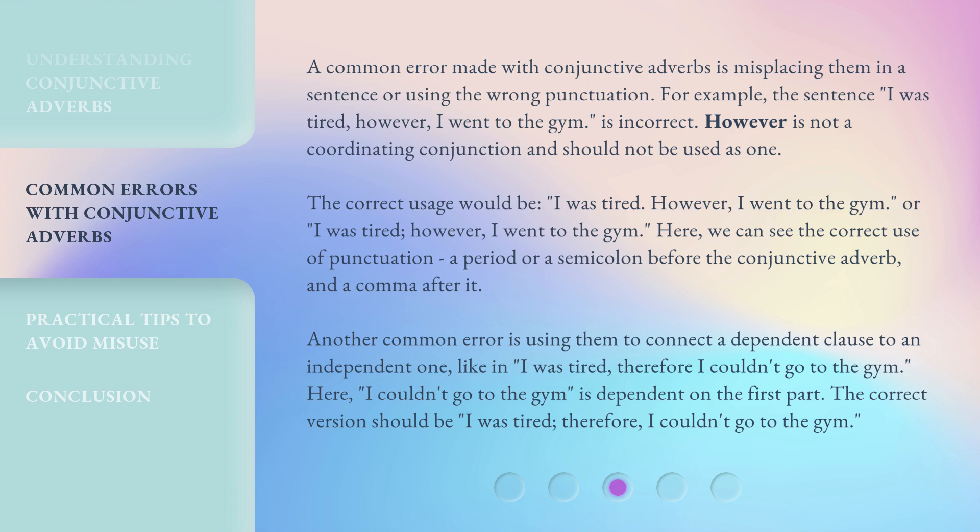Another common error is using conjunctive adverbs to connect a dependent clause to an independent one, like in 'I was tired, therefore I couldn't go to the gym.' Here, 'I couldn't go to the gym' is dependent on the first part. The correct version should be: 'I was tired; therefore, I couldn't go to the gym.'